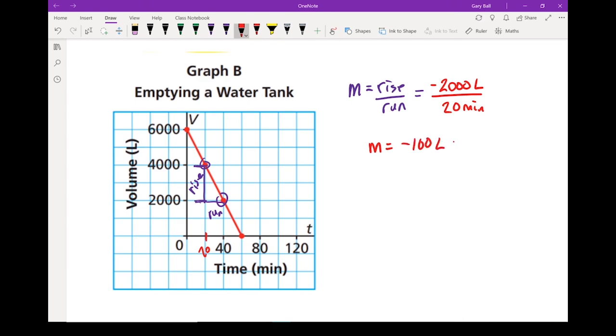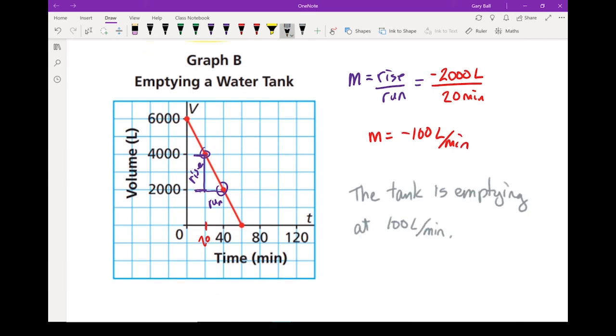So if I look at that, because it's a negative 100, it means the tank is emptying at 100 liters per minute. So every minute, the volume of the tank goes down by 100 liters.